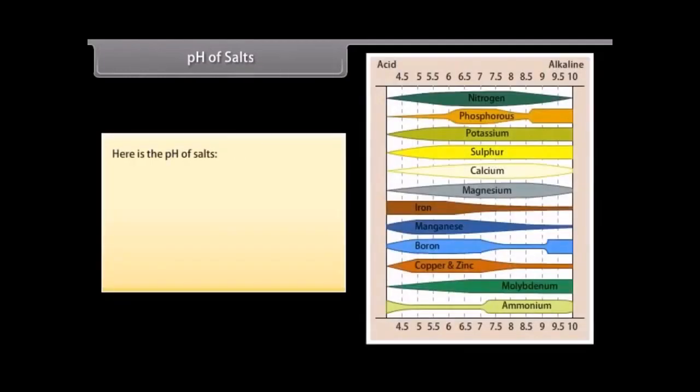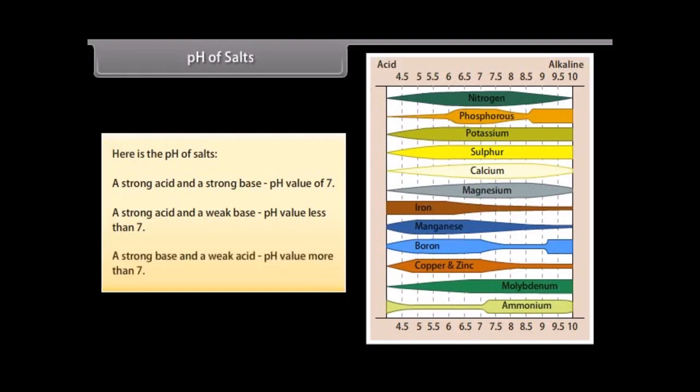pH of salts. Here is the pH of salts: A strong acid and a strong base, pH value of 7. A strong acid and a weak base, pH value less than 7. A strong base and a weak acid, pH value more than 7.